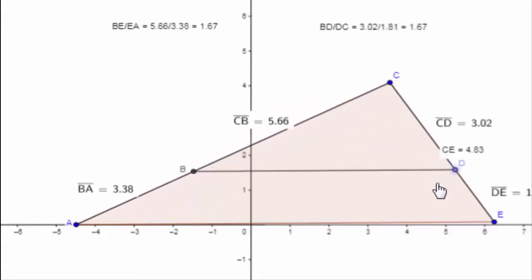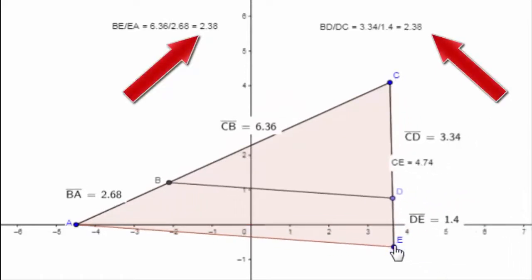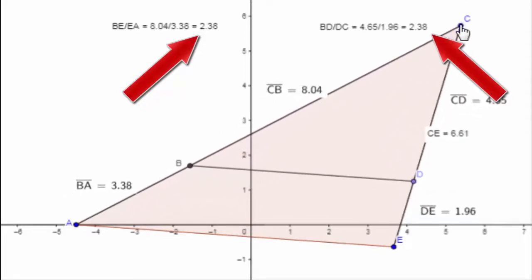Were you ever able to get that ratio to be different of the two segments on the sides? Did the fraction, I noticed the fractions change, but did the end result ever change to something different? No.